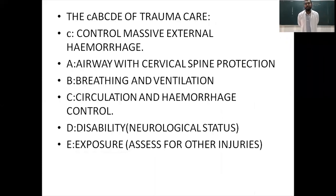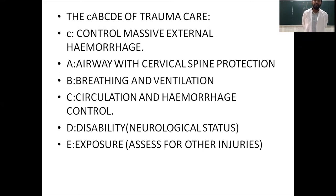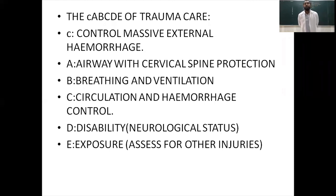The ABCDE of trauma care: First, C — control massive external hemorrhage, as there is no point in intubating or stabilizing a patient who is actively losing blood. Next, A — stabilize the airway with cervical spine protection. Then B — breathing and ventilation, followed by C — circulation and hemorrhage control. D — assess disability via neurological status. E — completely expose the patient to assess any other injuries that may have been missed.